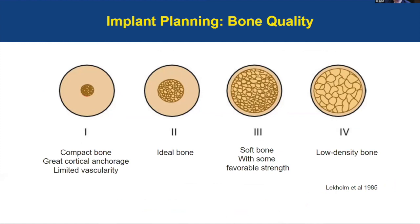Osseointegration success is related to bone quality and quantity. Dr. LeCone classified bone in four types. Type 1 is a very dense bone with almost entirely homogeneous compact bone that provides very good anchorage with a very thick cortical bone, but the problem is it has very tiny trabecular bone giving very low vascularity for osseointegration. Type 2 is considered the ideal bone for implants: a thick cortical bone gives very good cortical anchorage for primary stability, and there is enough trabecular bone to provide the vascularity necessary for the osseointegration process during healing.